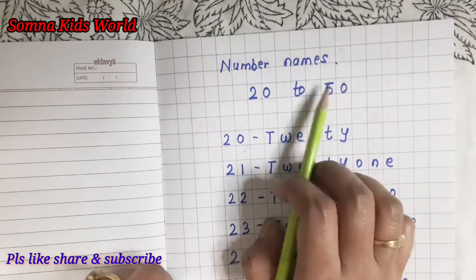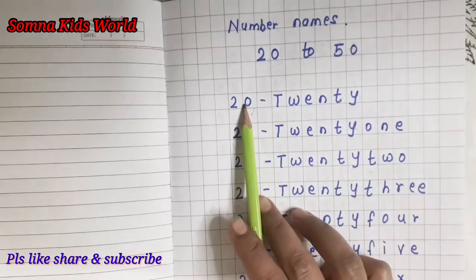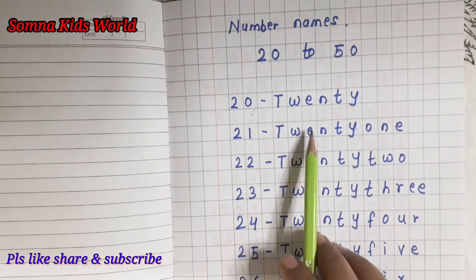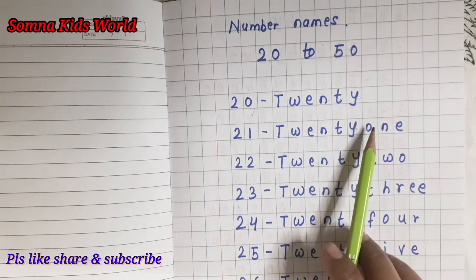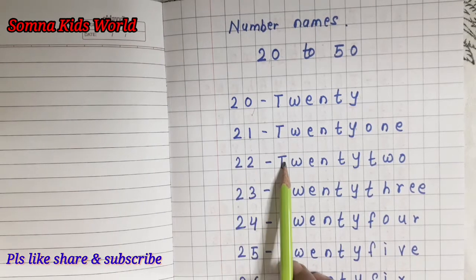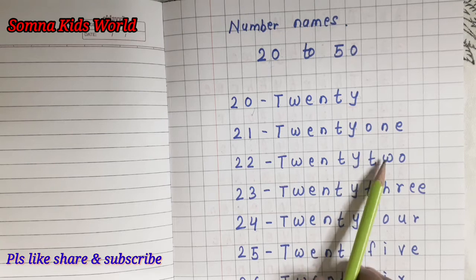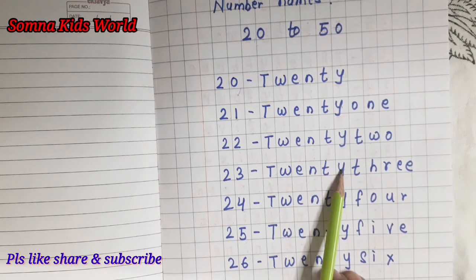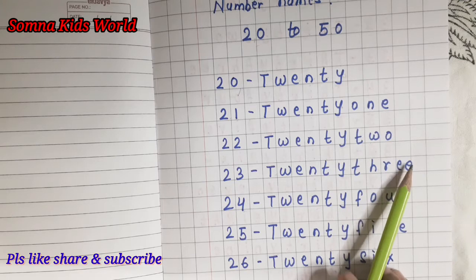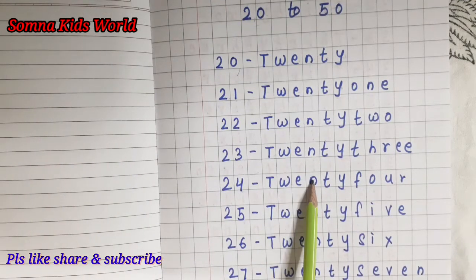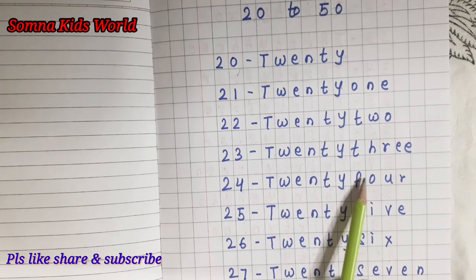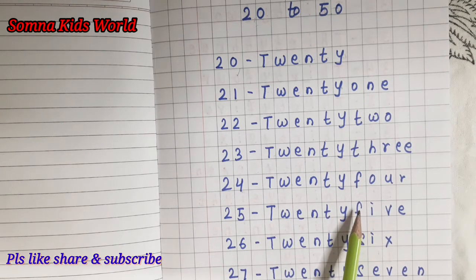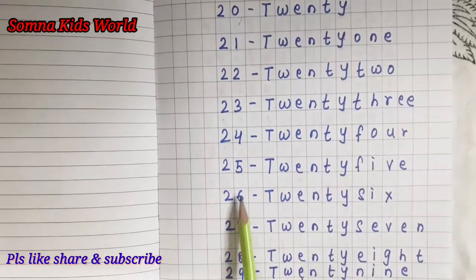So children, please repeat after me. 20 — TWENTY. 21 — TWENTY ONE. 22 — TWENTY TWO. 23 — TWENTY THREE. 24 — TWENTY FOUR. 25 — TWENTY FIVE.